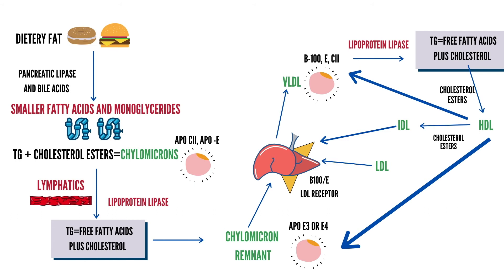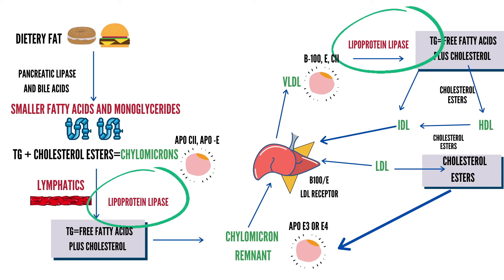Type 1 hyperlipoproteinemia occurs due to a defect in enzymatic degradation of triglycerides by lipoprotein lipase. This results from an autosomal recessive mutation leading to deficient or abnormal lipoprotein lipase, a deficiency in apoprotein C2, or deficiency of glycosylphosphatidylinositol-anchored HDL binding protein, which moves lipoprotein lipase to its site of action. When lipoprotein lipase isn't working, it leads to accumulation of chylomicrons and hypertriglyceridemia. When VLDL is also elevated alongside chylomicrons, it is classified as type 5 hyperlipoproteinemia.